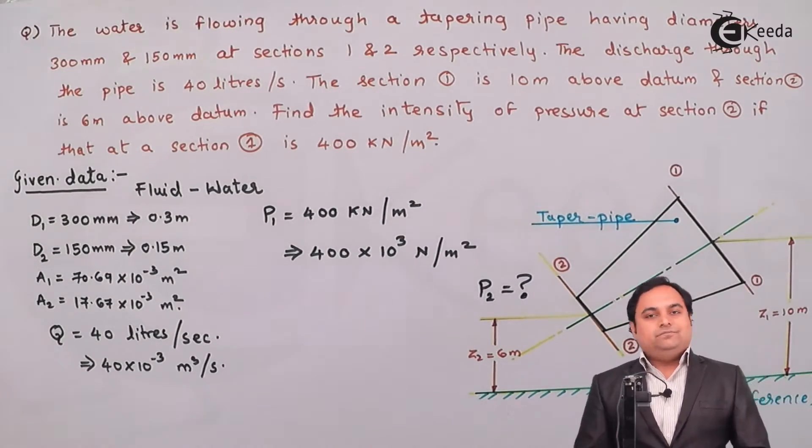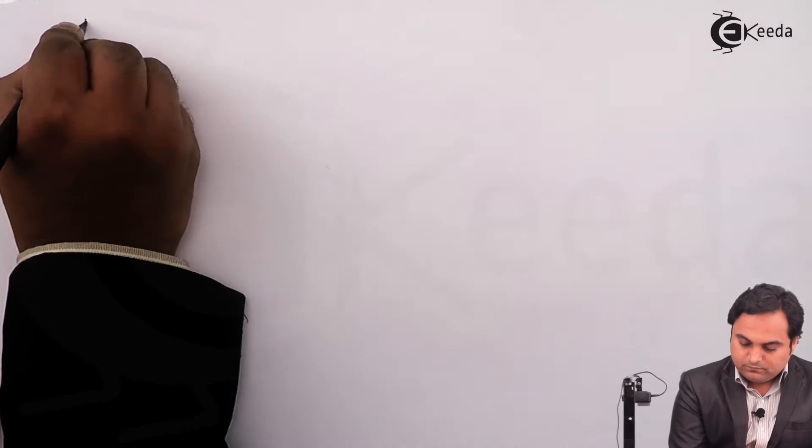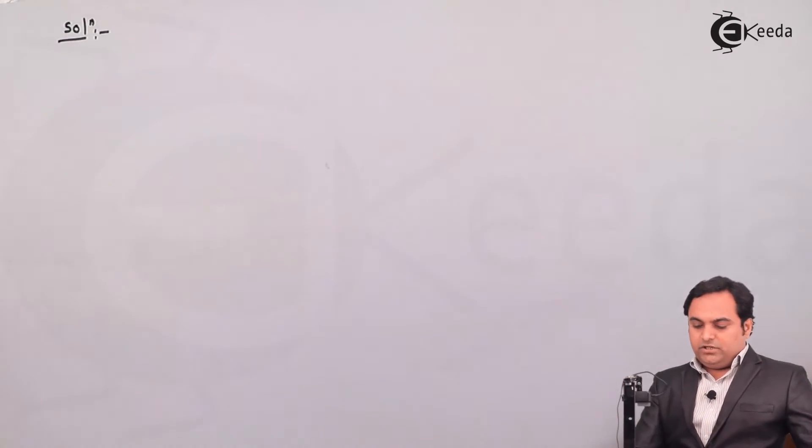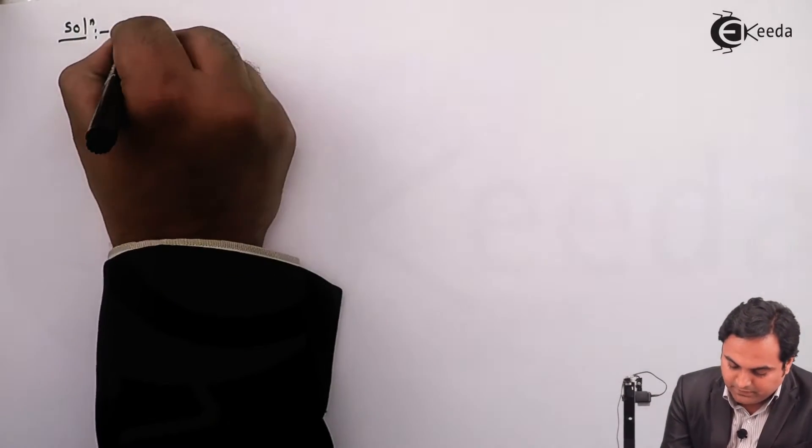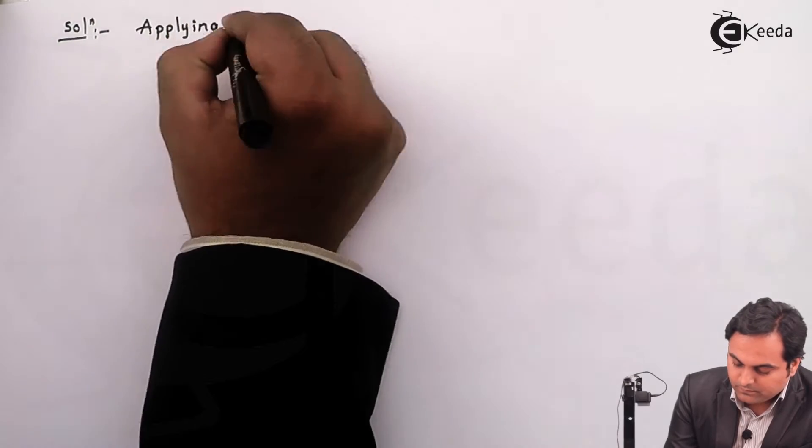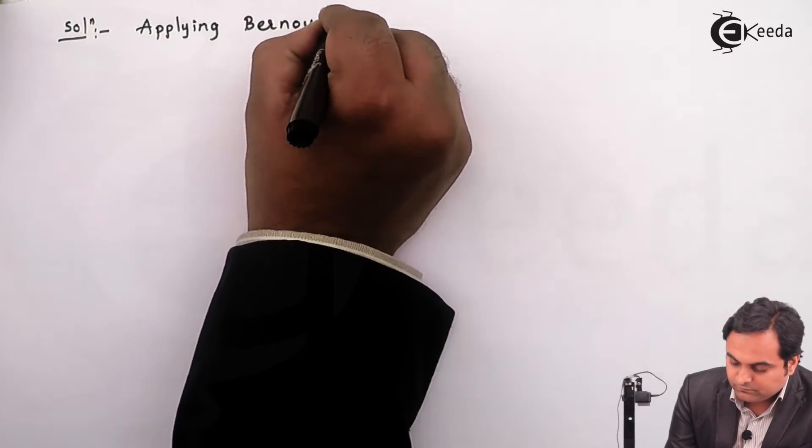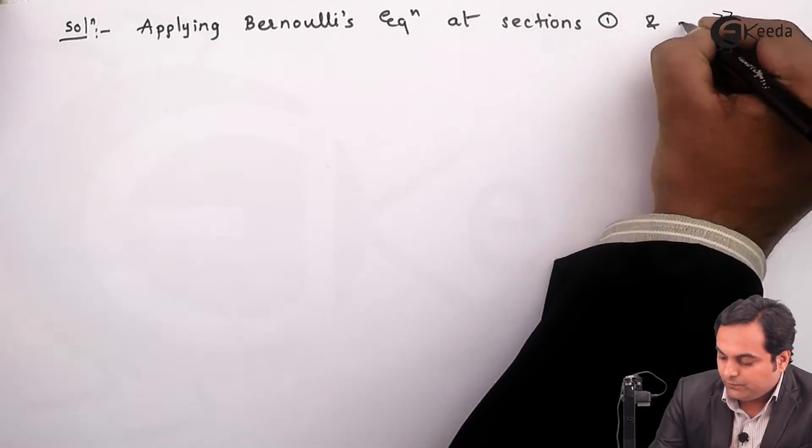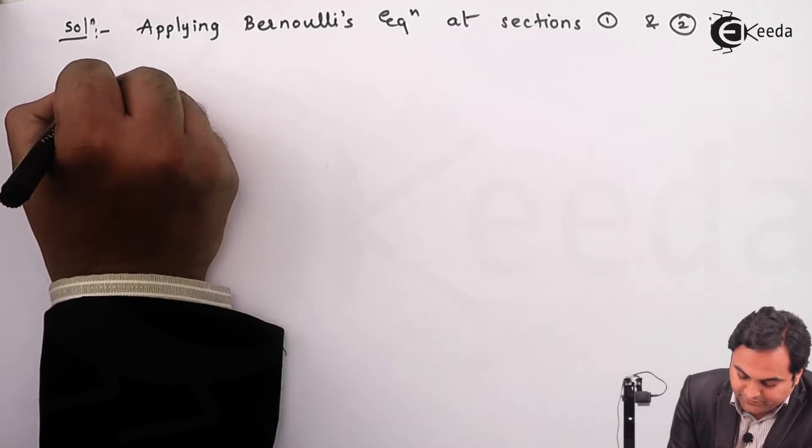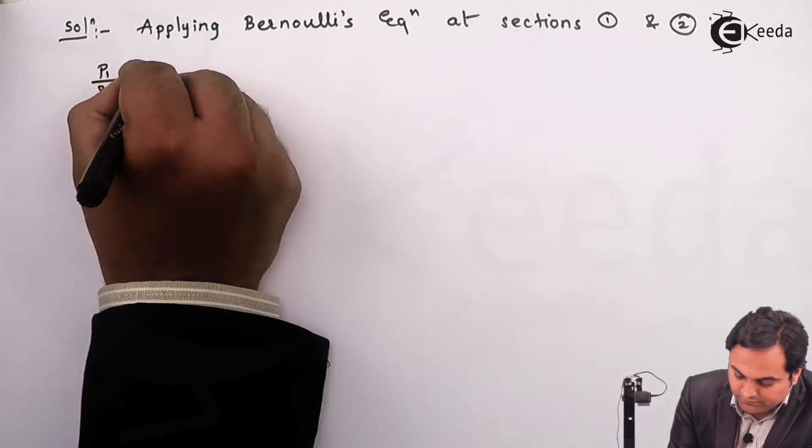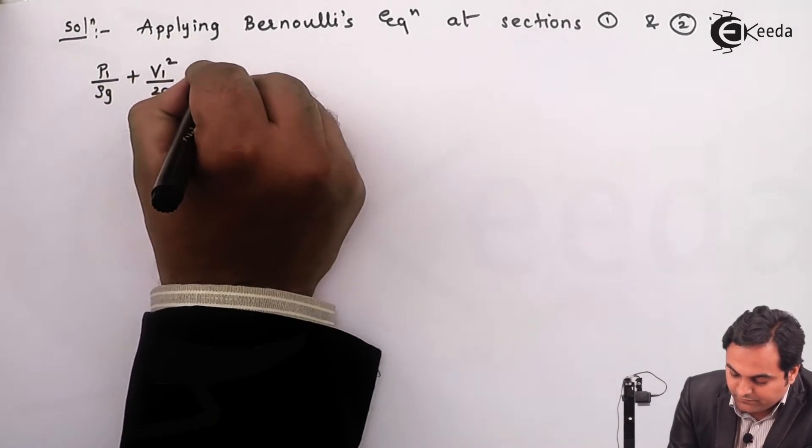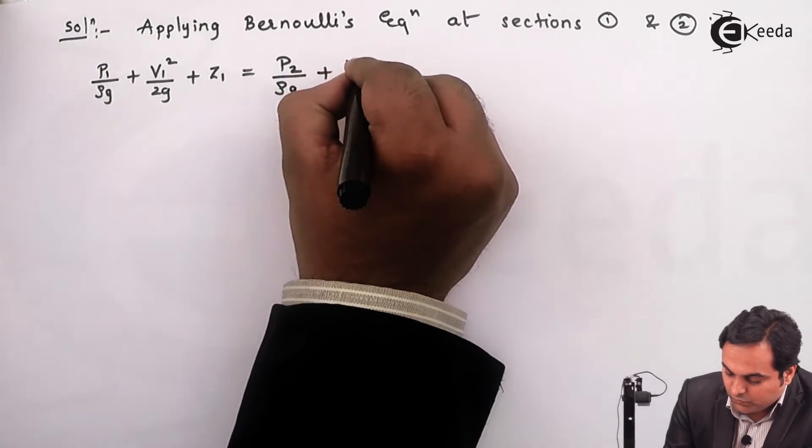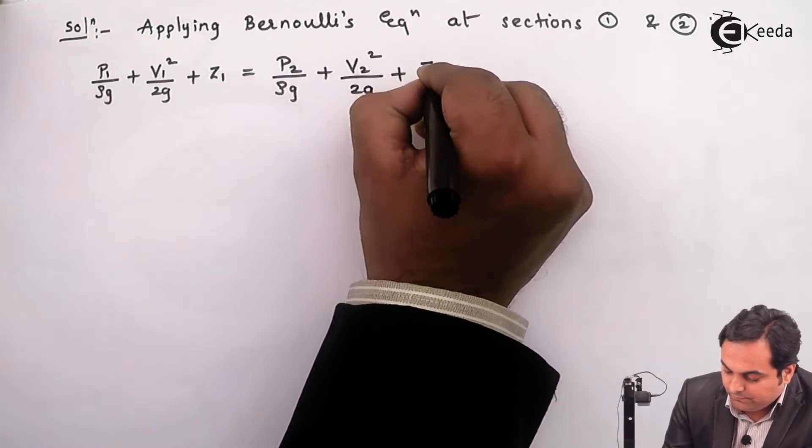Now let us get started with the solution to this problem. When we have such a problem where two sections are given, we can start by using the Bernoulli's equation. So I will say, applying Bernoulli's equation at sections 1 and 2. At section 1 it can be written as P1 upon rho g plus V1 square by 2g plus Z1. At section 2, P2 upon rho g plus V2 square by 2g plus Z2.